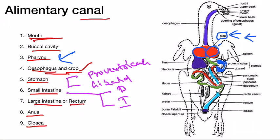This bilobed structure is called the crop, useful for storing food in birds. When birds take food grains quickly, those food grains are stored in this crop part of the esophagus. When food grains are stored in the crop, the dry food grains become smooth so that digestion becomes easier in the next part of the digestive system.